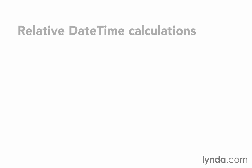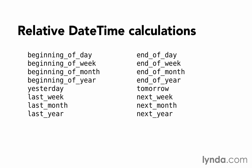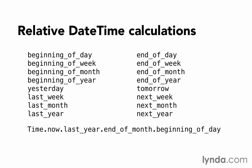We can also do relative datetime calculations. We have beginning_of_day, end_of_day, beginning_of_week, end_of_week, and so on, all the way to last_year and next_year. These work well when we want to jump to a new time relative to the time that we already had. So for example, time.now.last_year takes the current time and moves exactly one year back in time. And then if we say end_of_month, that jumps from that point forward to the end of the month. And beginning_of_day makes sure that we're at the beginning of that day — midnight. This is a good way to jump around in time to find exactly the time you're looking for in a very readable way.